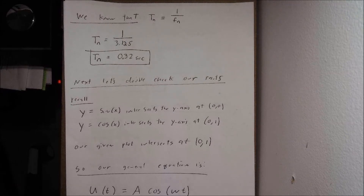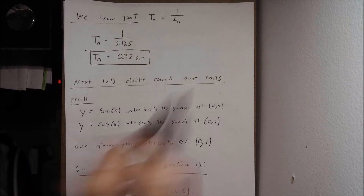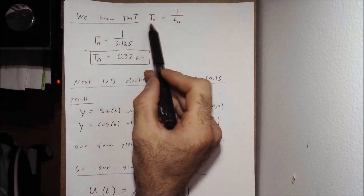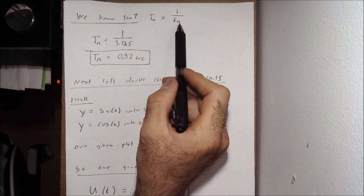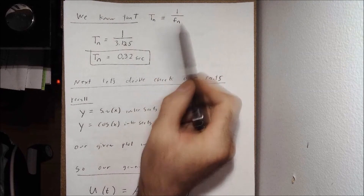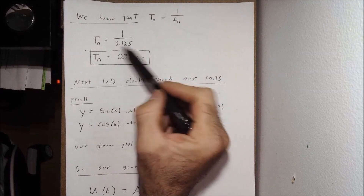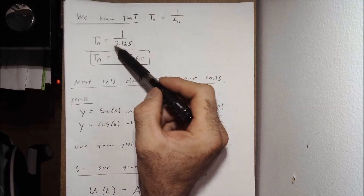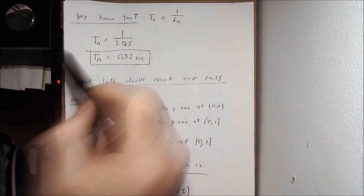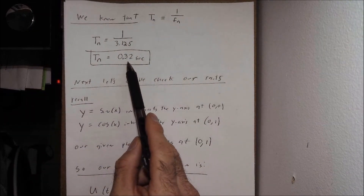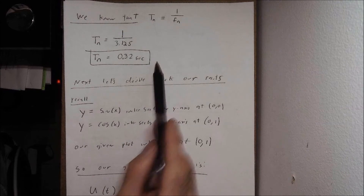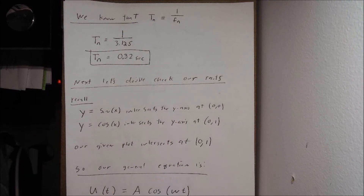The other thing they asked us to solve for is the period. The period T sub n equals 1 over f sub n. Plugging in our known value of 3.125 Hz: T sub n equals 1 over 3.125, which gives T sub n equal to 0.32 seconds. Those are the two things they asked us to solve for.